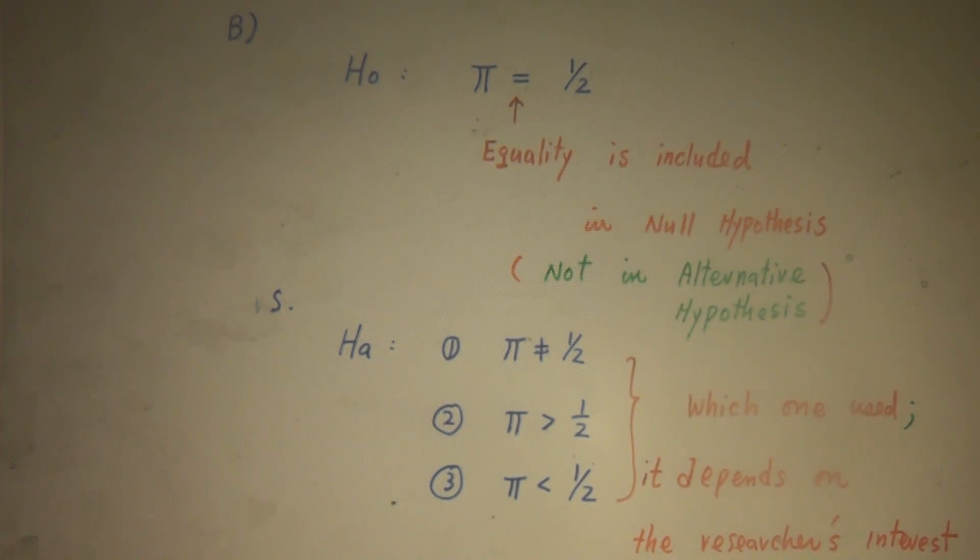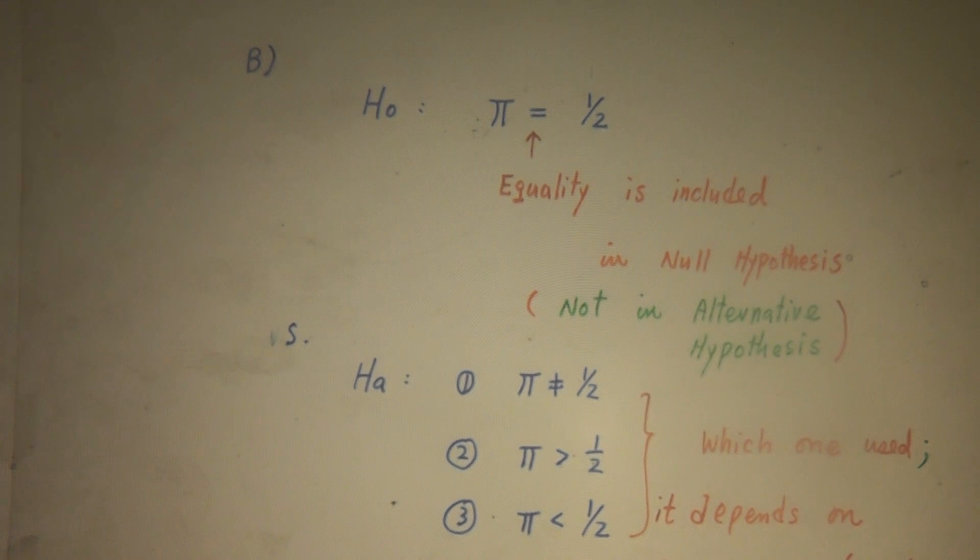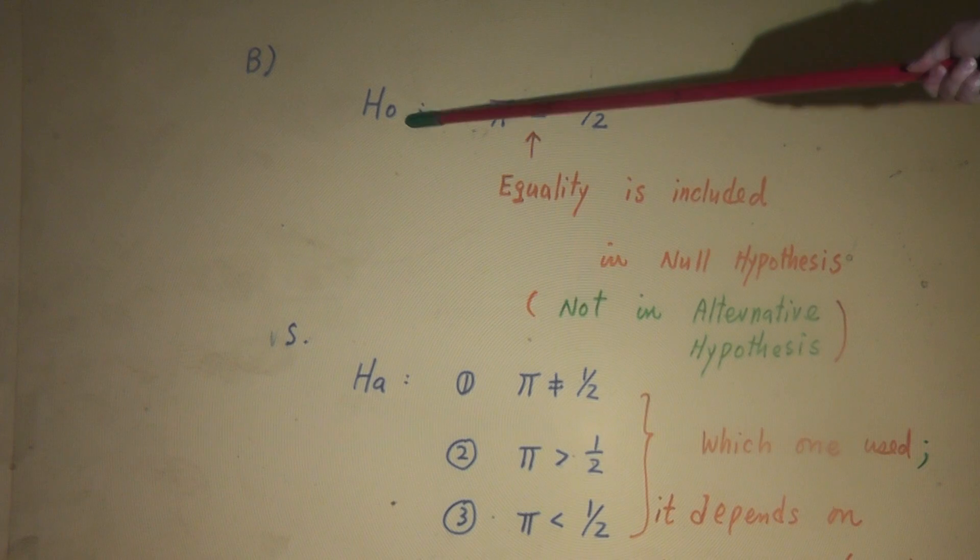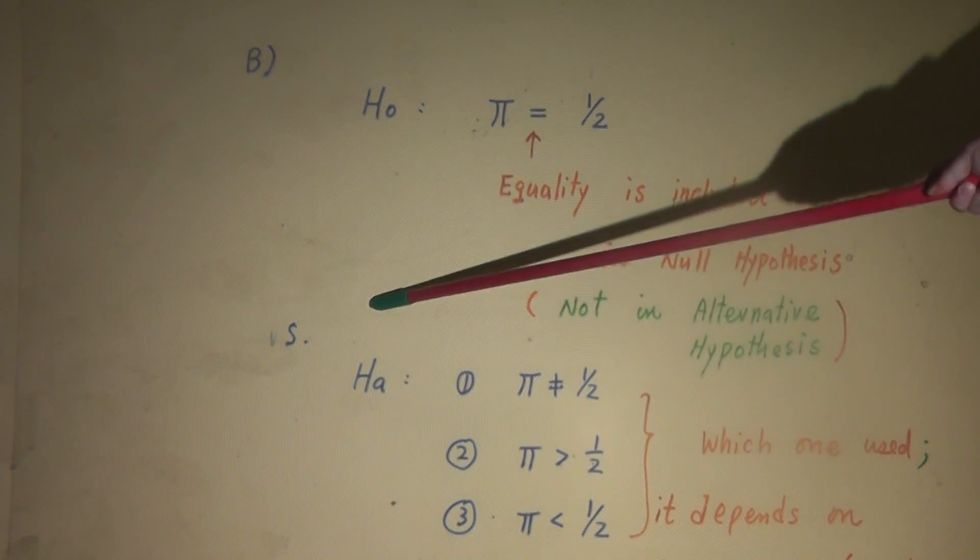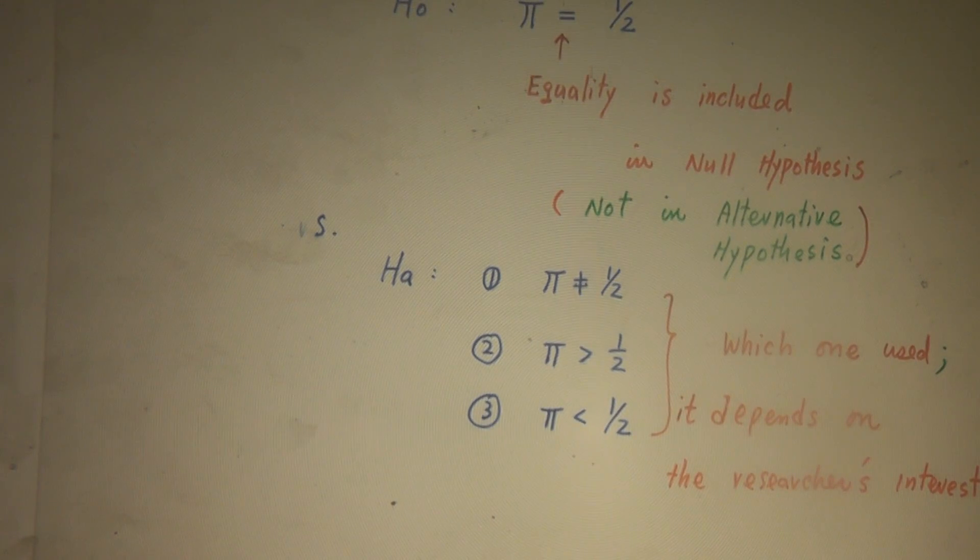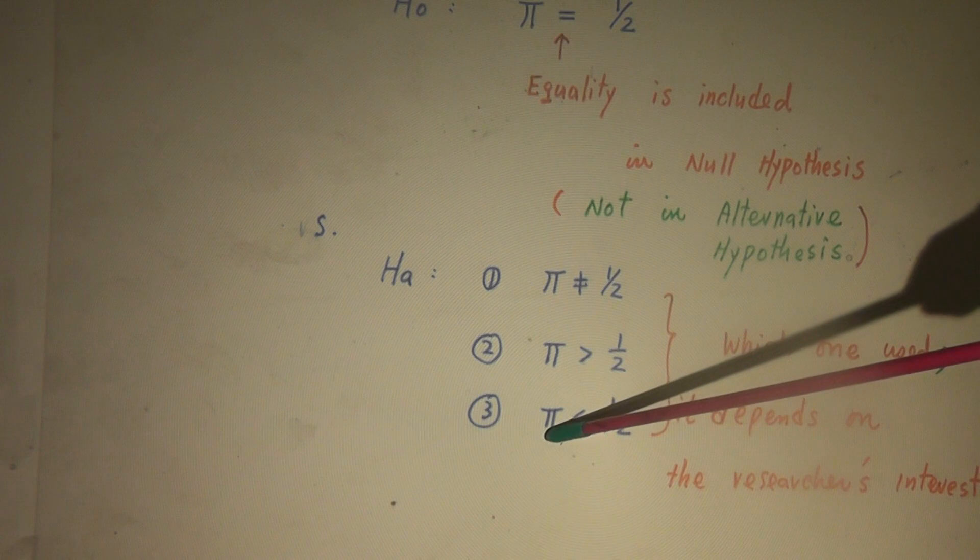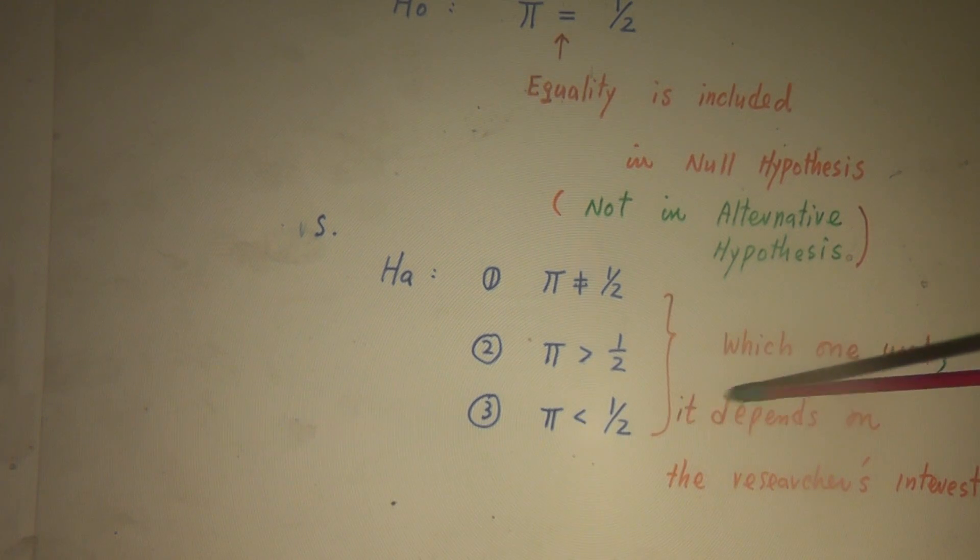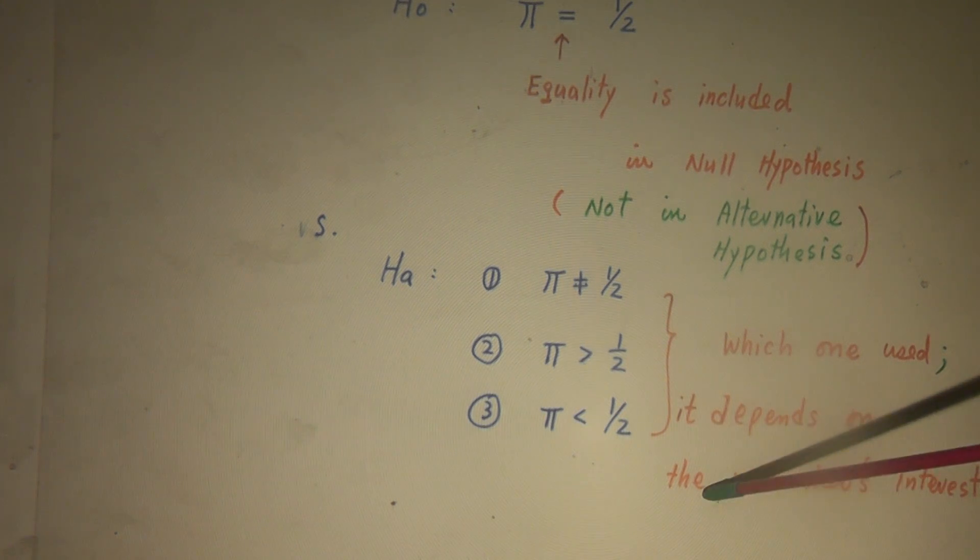Now, comment B. Null hypothesis, π equal to 50%, or one half. Look at here. The equality should always be included in the null hypothesis, not in alternative hypothesis. Equal sign should always come with null hypothesis. And against HA, against HA. π is not equal to 50%, π is greater than 50%, π is less than 50%. Which one we should use? It depends on what? It depends on the researcher's interest.